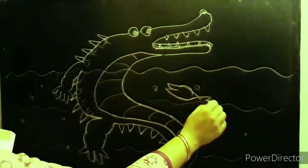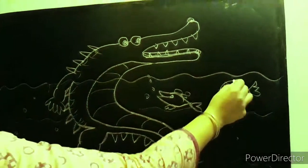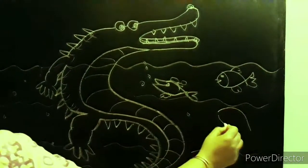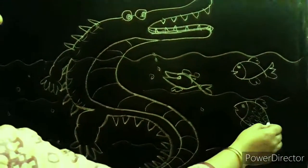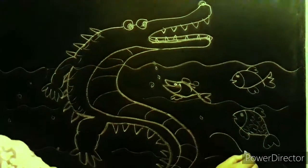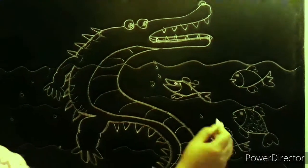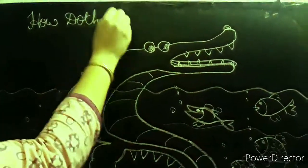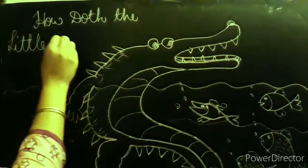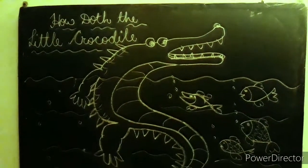In the next line the poet says that the crocodile smiles cheerfully and behind his fake smile he neatly spreads his claws waiting for an opportunity to catch the innocent fish. The crocodile welcomes fish into his mouth by showing his gentle smile. So his smile is fake and not genuine which attracts the fish and he eats it.